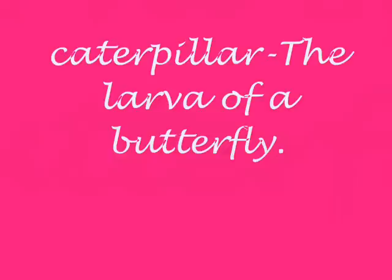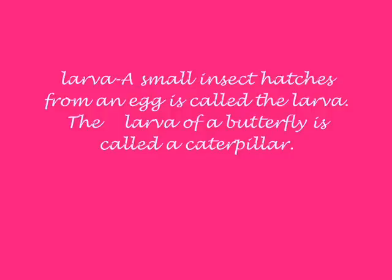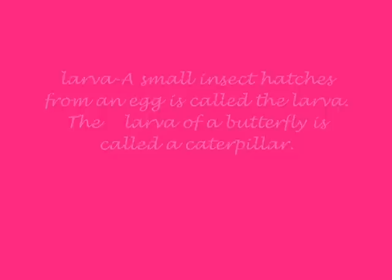Here is some important vocabulary you will need to know. The caterpillar is the larva of a butterfly. Host plants are the plants the eggs are laid on. Chrysalis is the hard shell; inside the chrysalis is the butterfly. A small insect hatches from an egg, called a larva. The larva of a butterfly is called a caterpillar.